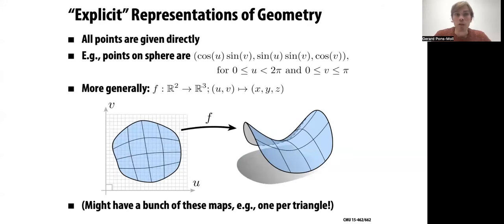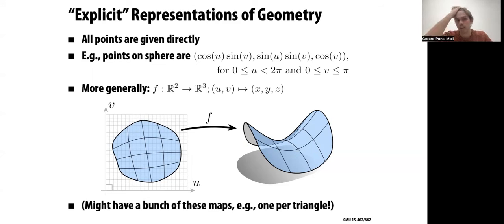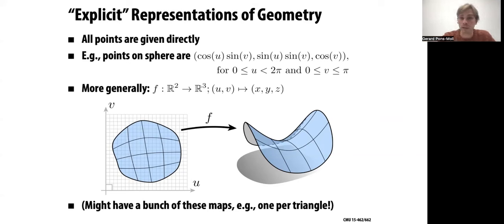Explicit representations of geometry are those in which the points are given directly. You have parameters that parametrize the surface and you can directly access the points. For example, points on the sphere can be defined explicitly as (cos u · sin v, sin u · sin v, cos v). Any values of u in [0, 2π] and v in [0, π] give a point on the surface. Generally, an explicit representation is a mapping from ℝ² to ℝ³, since the intrinsic dimensionality of a surface is 2.